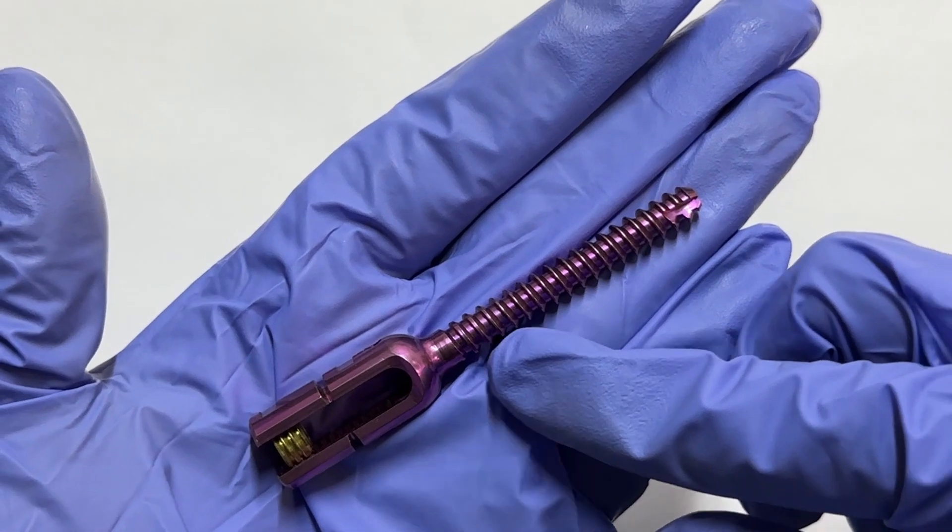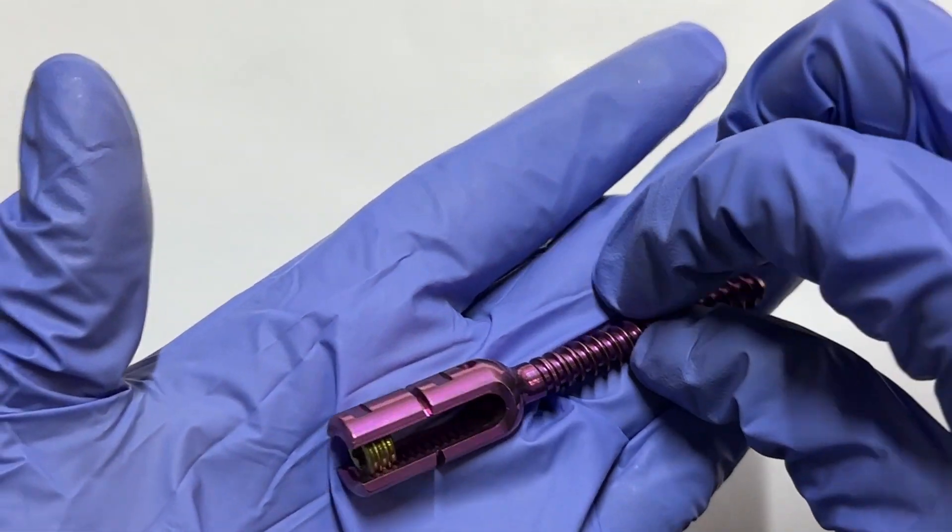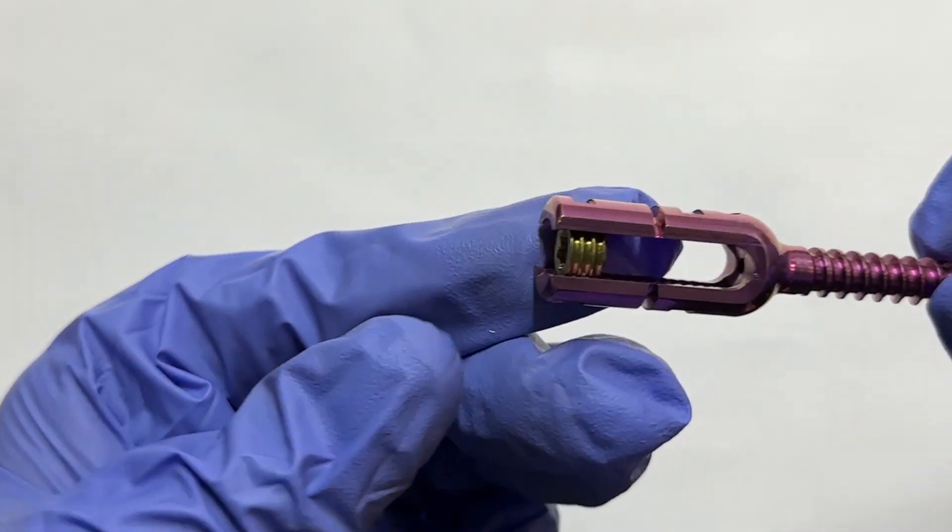Diving into the specifics, there are two distinct types of pedicle screws: monoaxial pedicle screw and polyaxial pedicle screw.